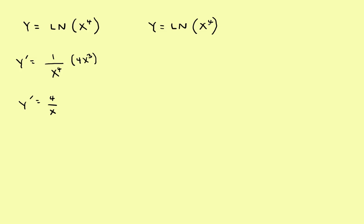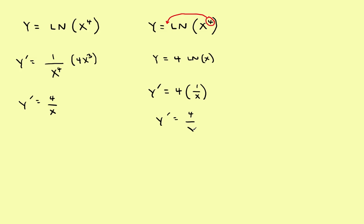Sometimes an easier way is to use the log rules first. Take the exponent and move it down in front, so y equals 4 times the natural log of x. I have not yet taken the derivative — I've just used log rules to bring the 4 down in front. Now taking the derivative: y prime equals 4 times the derivative of the natural log of x, which is 1 over x, giving a final answer of 4 over x. Both methods give the same answer, but using log rules is a little bit easier.